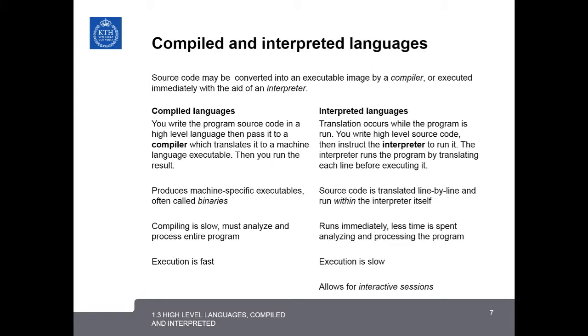In contrast, interpreted languages translate the code while the program is running. You write the high-level source code and then instruct an intermediate program called the interpreter to run it. The interpreter runs the program by translating each line directly before executing it. The source code is translated line by line and run within the interpreter. The code is run immediately unless spent his time analyzing and processing the entire program, but overall execution is much slower. However, interpreted languages allow for interactive sessions.